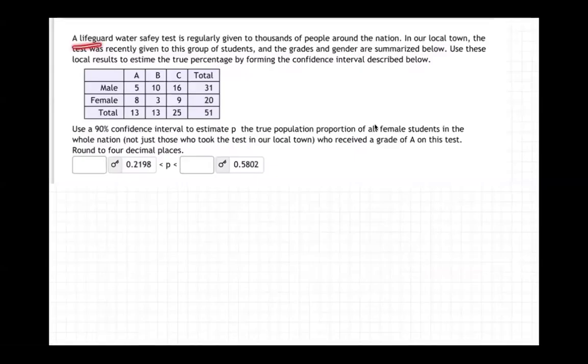This question says a lifeguard water safety test is regularly given to thousands of people around the nation. In our local town, the test was recently given to this group of students, and the grades and gender are summarized below. Use these local results to estimate the true percentage by formulating the confidence interval described below.